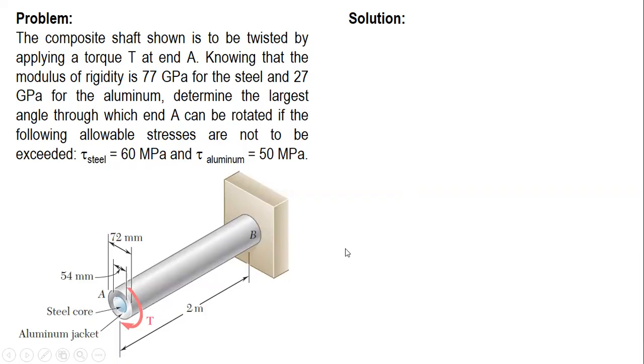After that, use that value of torque to solve for the rotation at A. So we have one value for the angle of twist. And then, condition number two, we will check aluminum. We set stress equal to 50 and then solve for the resisting torque.